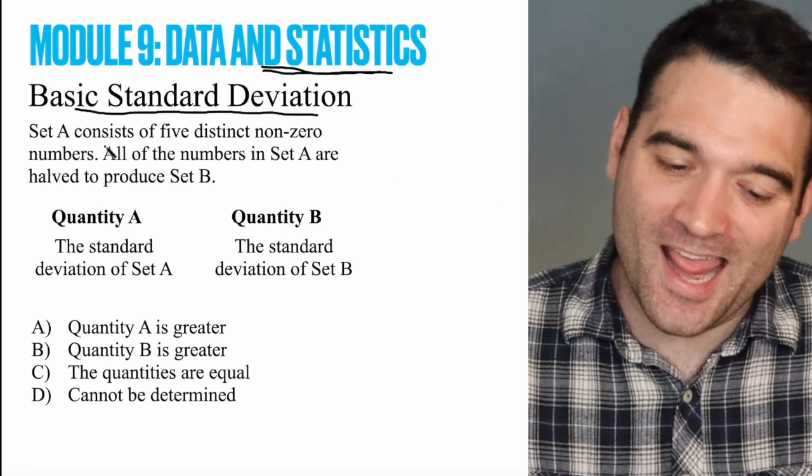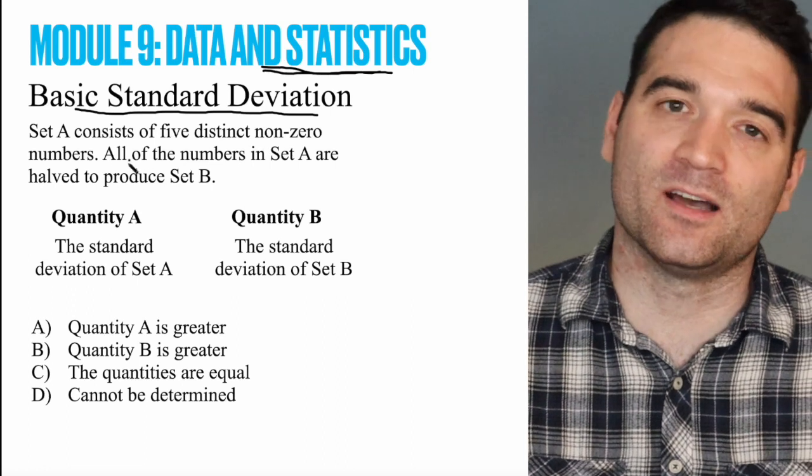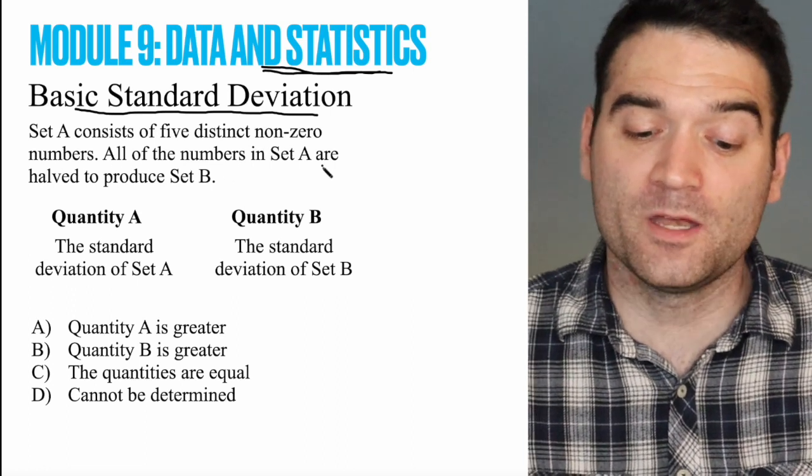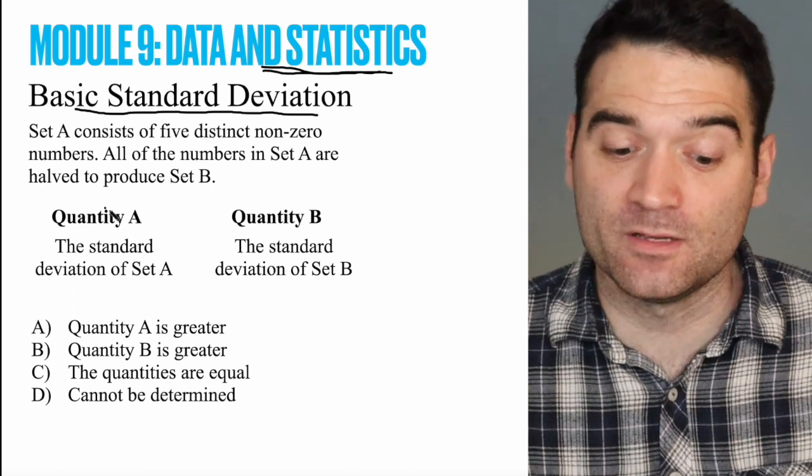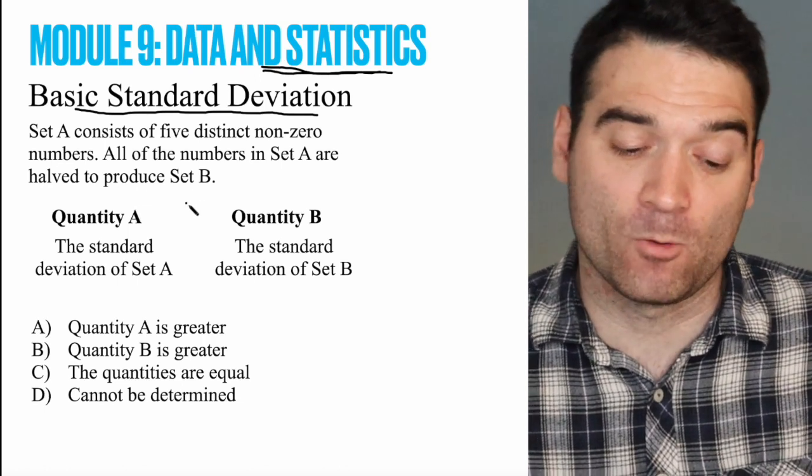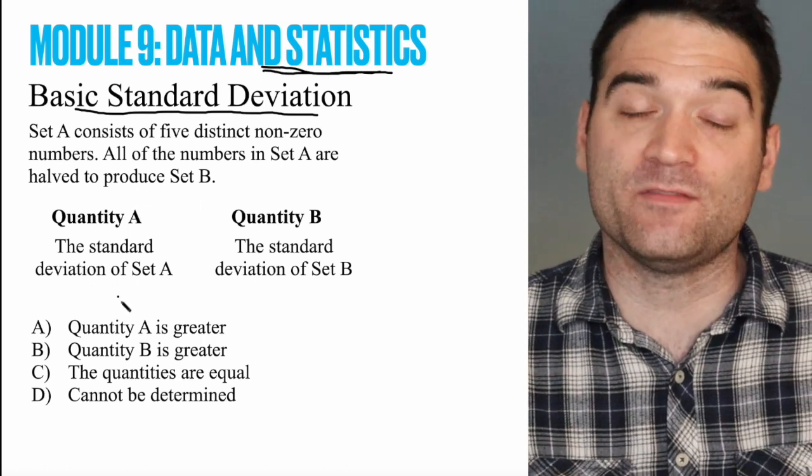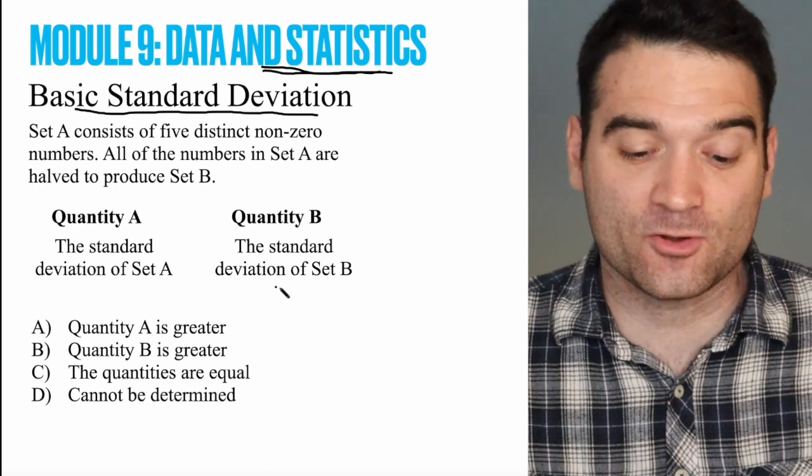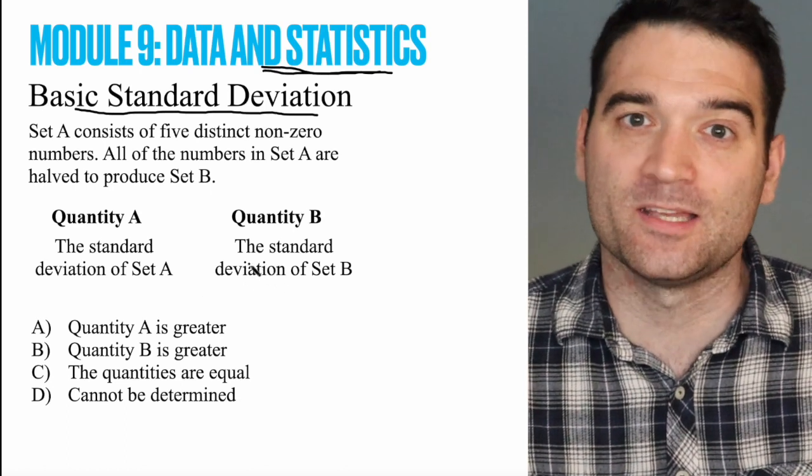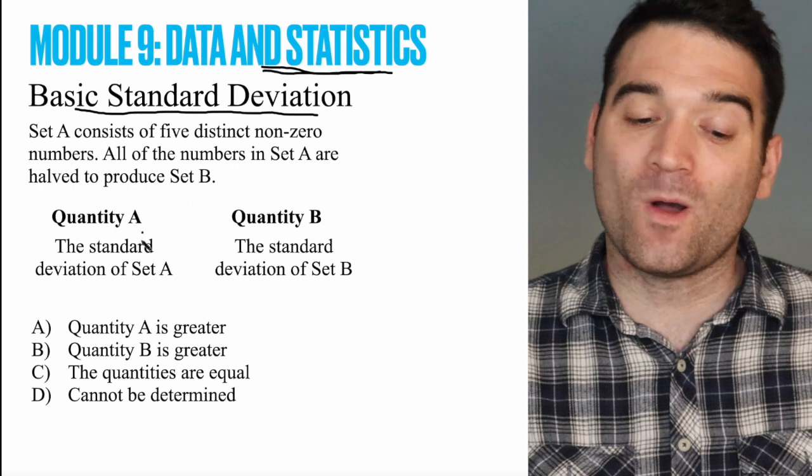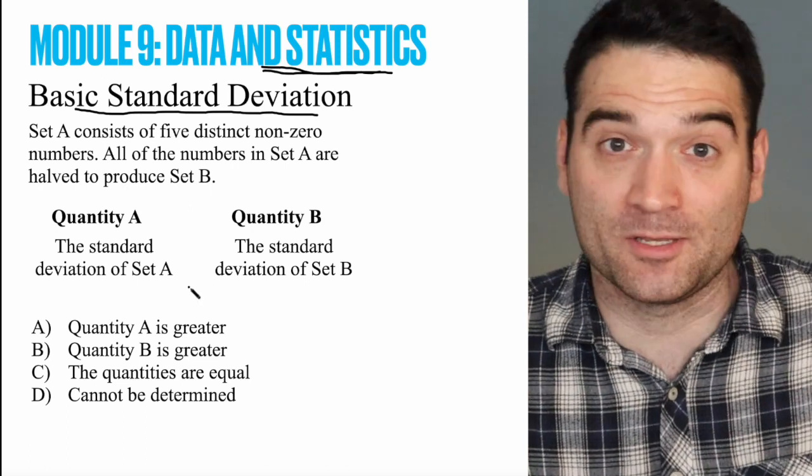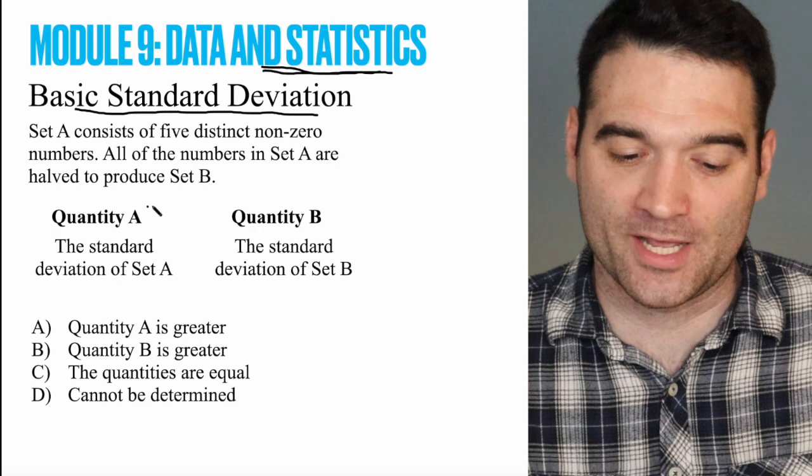Okay, set A consists of five distinct non-zero numbers. All of the numbers in set A are halved, that's cut in half, to produce set B. We want to know what's greater here, the standard deviation of set A or the standard deviation of set B. Well, on quantitative comparison, it's always a good habit to just try something out, right? Try a set of numbers out.